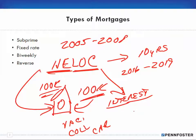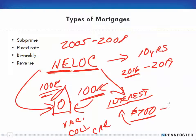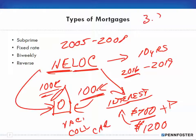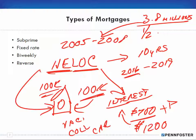So starting around 2016, which is 10 years later, all these people who borrowed $100,000 and were only paying interest — say $700 a month — would now have to pay principal too. Instead of $700 they'd owe $1,200 a month, and many people won't be able to afford it. My understanding is 3.8 million of these loans were made during that period, and they fully expect half of those people will not be able to pay back.